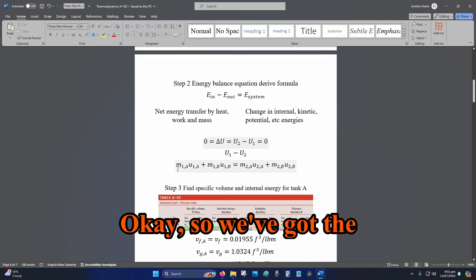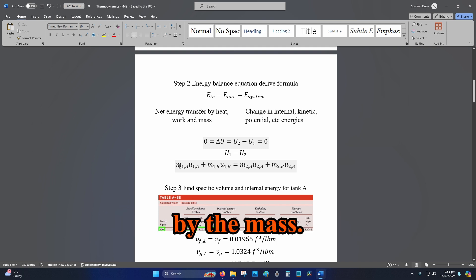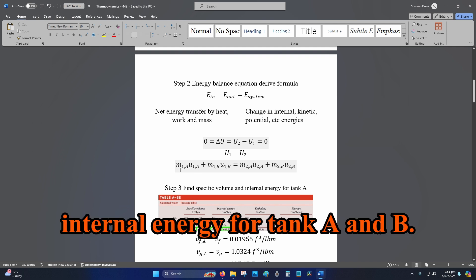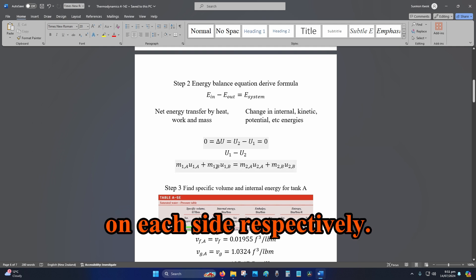Okay, so we've got the internal energy multiplied by the mass, so that's specific internal energy for tank A and B. And then we've got initial and we've got the final on each side respectively.